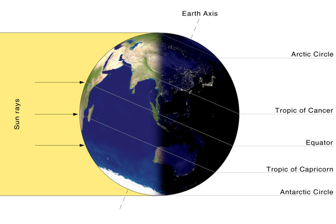The seasons occur because the Earth's axis of rotation is not perpendicular to its orbital plane — the plane of the ecliptic — but currently makes an angle of about 23.44 degrees, called the obliquity of the ecliptic, and because the axis keeps its orientation with respect to an inertial frame of reference. As a consequence, for half the year the northern hemisphere is inclined toward the Sun while for the other half year the southern hemisphere has this distinction. The two moments when the inclination of Earth's rotational axis has maximum effect are the solstices.